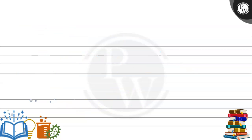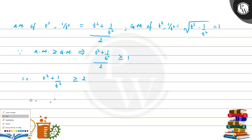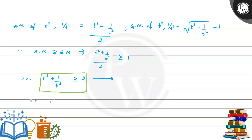Now let's consider the arithmetic mean of t squared and 1 divided by t squared, which is (t squared plus 1 divided by t squared) divided by 2. The geometric mean of t squared and 1 divided by t squared equals square root of (t squared times 1 divided by t squared), which equals 1. Since AM is greater than or equal to GM, we get t squared plus 1 divided by t squared is greater than or equal to 2. Let's call this equation 2.